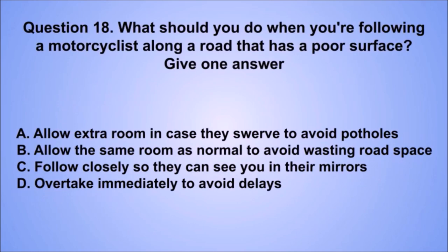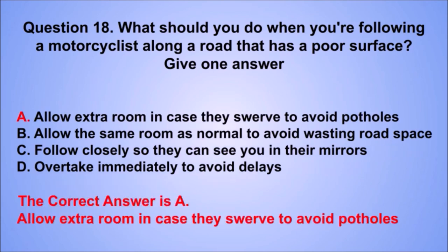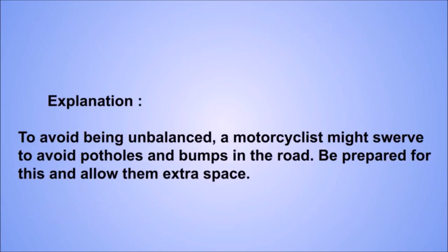Question 18. What should you do when you're following a motorcyclist along a road that has a poor surface? The correct answer is A: Allow extra room in case they swerve to avoid potholes. To avoid being unbalanced, a motorcyclist might swerve to avoid potholes and bumps in the road. Be prepared for this and allow them extra space.